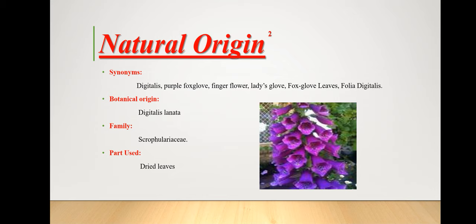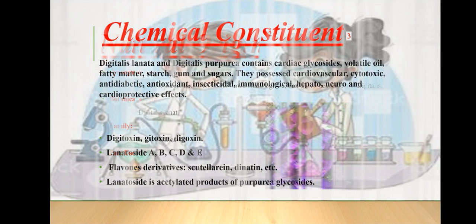The natural origin of digoxin: it is also known as digitalis, purple foxglove, finger flower, ladies' glove, and fox glove leaves. The concentration of digoxin is maximum in the dry leaf of Digitalis lanata. Its botanical origin is Digitalis lanata, and the part used is mainly dried leaves.